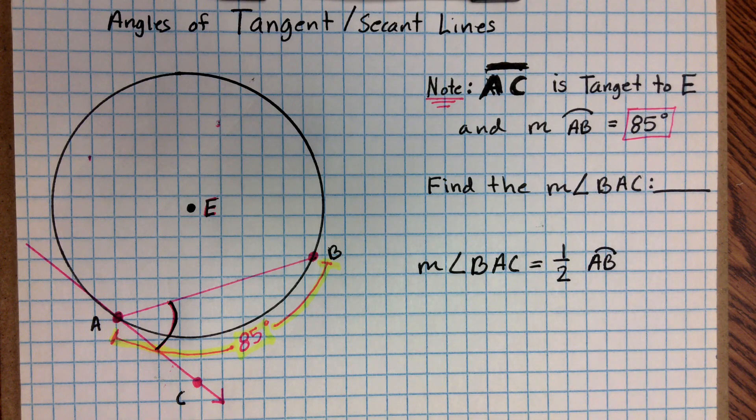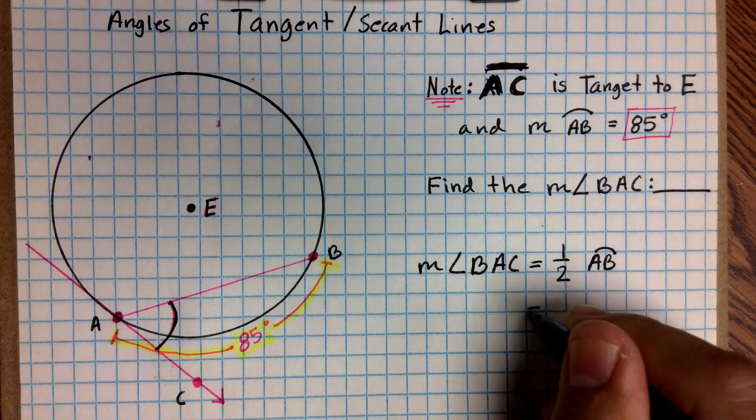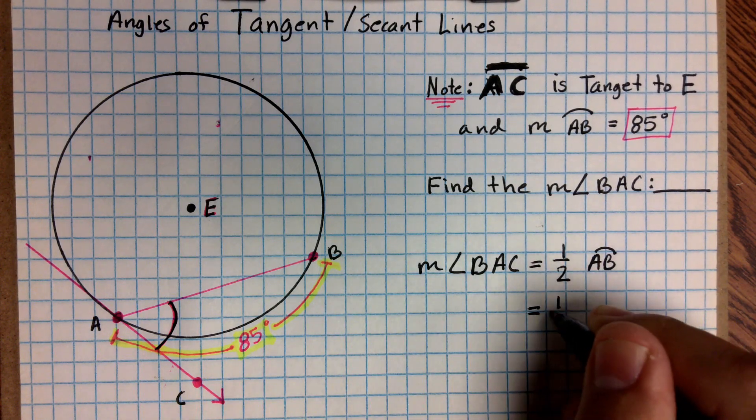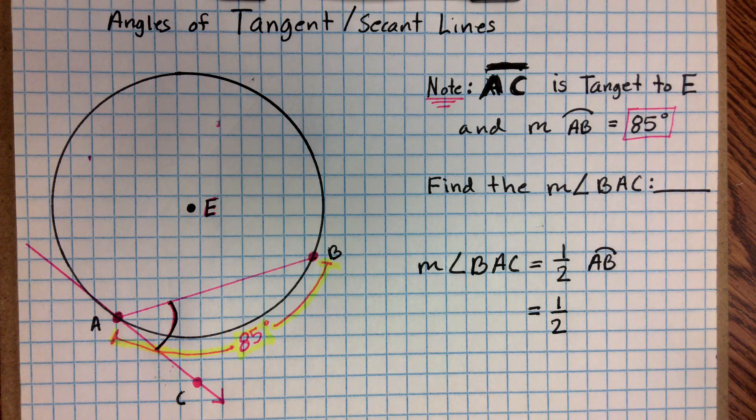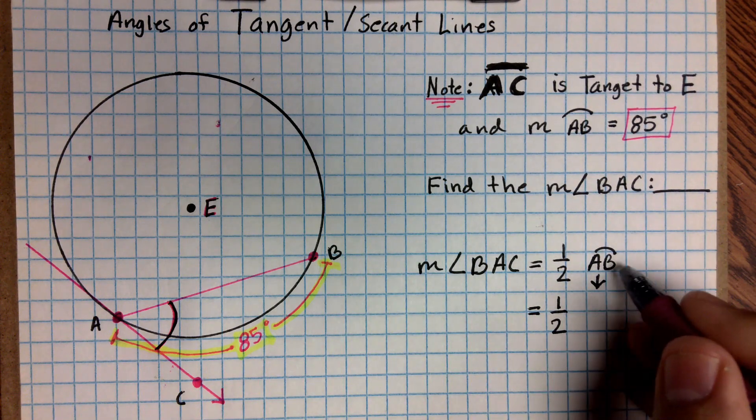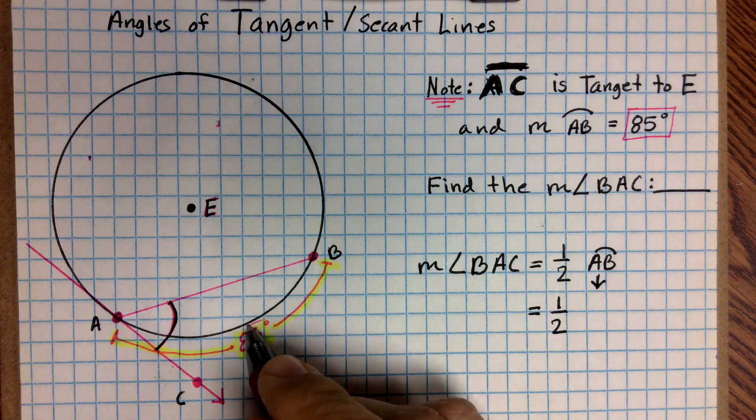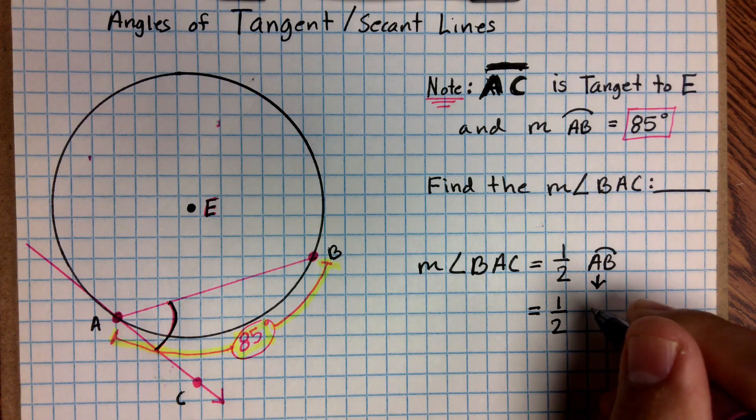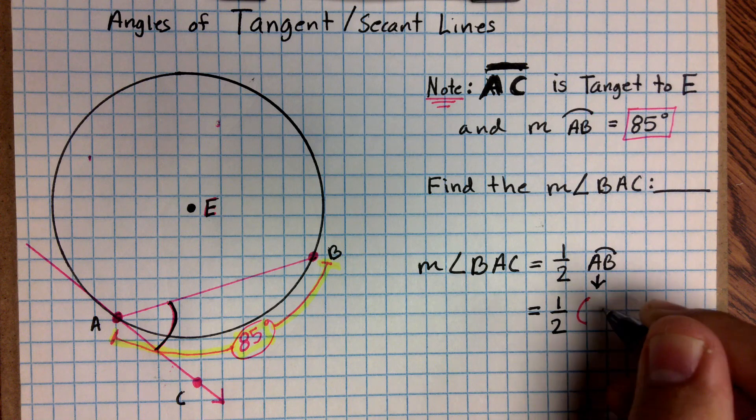So if I go ahead and substitute what we know to find the measure of this angle. This one-half, that's a number. It's not going to change. It's a constant. And then this arc AB, that inscribed arc, the value of it is 85 degrees. So I'm actually going to put here in parentheses 85.